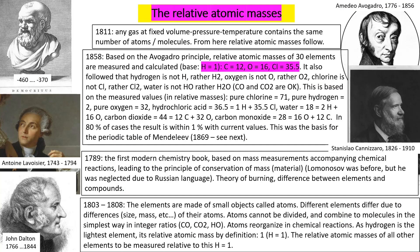Let me explain how we get modern values for atomic masses. Since 1858, thanks to Cannizzaro, we have had a good system of relative atomic masses. The only problem is they are not accurate enough — the values are known with only two or at most three digits of accuracy.